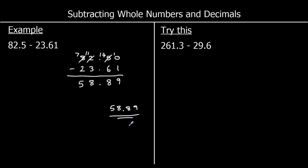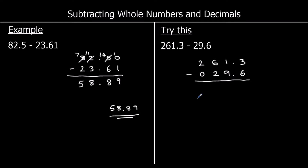And a question for you to try. So pause the video, give it a go, and press play when you're ready for the answer. Okay, so 261.3, and I'm going to line up 29.6. So tens with tens, ones with ones, and tenths with tenths. I've got nothing in the hundreds for 29.6, so I can add a zero or leave it blank. Okay, we're going to take away now. Let's start with the smallest column, which is the tenths. I've got 3 take away 6; I don't want to do that.